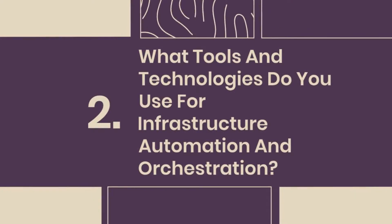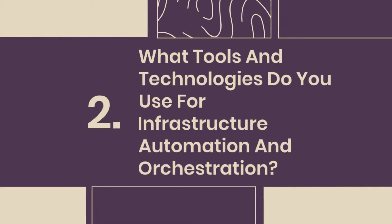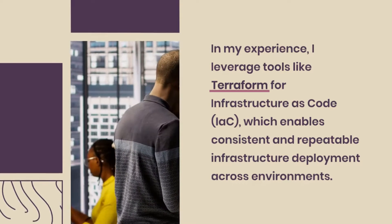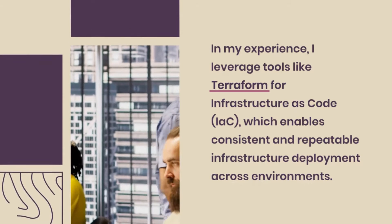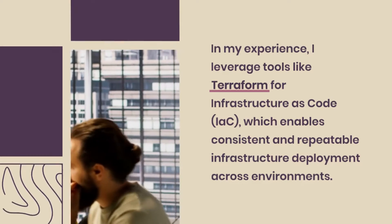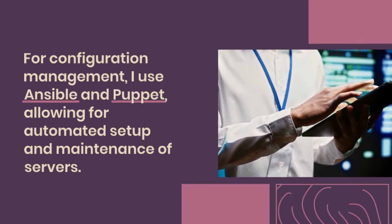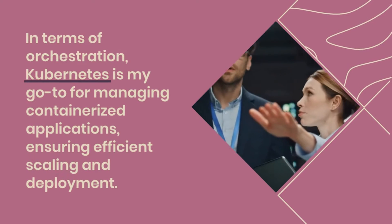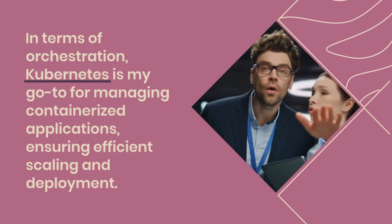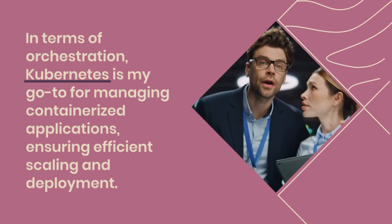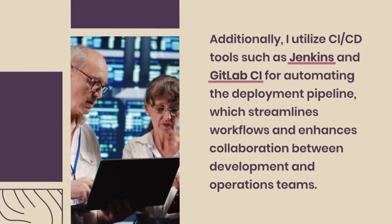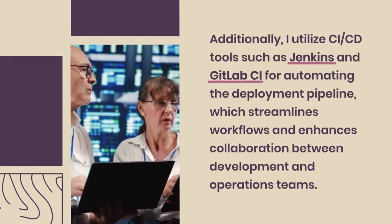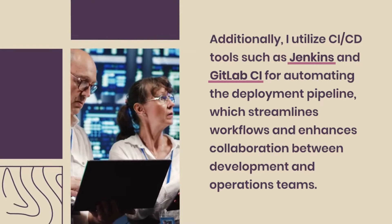Question 2: What tools and technologies do you use for infrastructure automation and orchestration? I leverage tools like Terraform for Infrastructure as Code (IAC), which enables consistent and repeatable infrastructure deployment across environments. For configuration management, I use Ansible and Puppet, allowing for automated setup and maintenance of servers. For orchestration, Kubernetes is my go-to for managing containerized applications, ensuring efficient scaling and deployment. Additionally, I utilize CI/CD tools such as Jenkins and GitLab CI for automating the deployment pipeline, which streamlines workflows and enhances collaboration between development and operations teams.